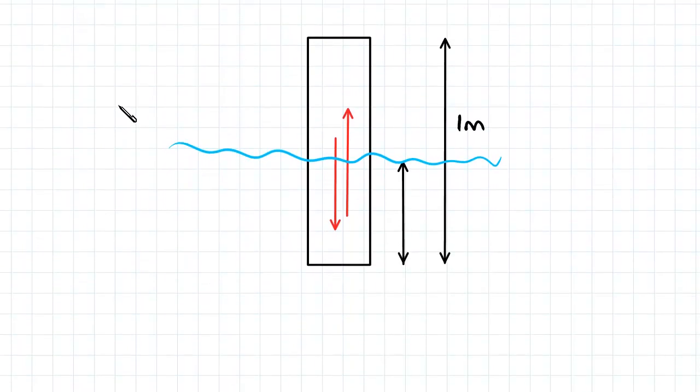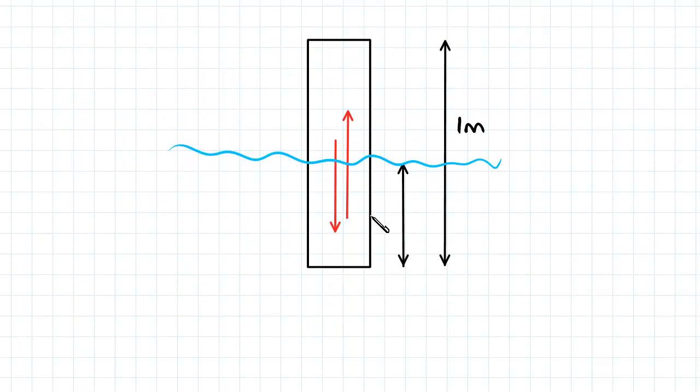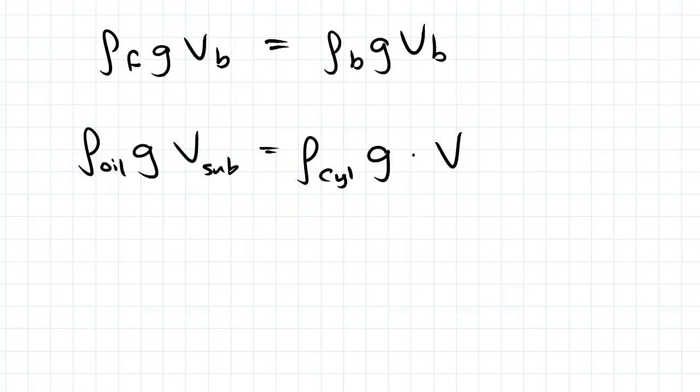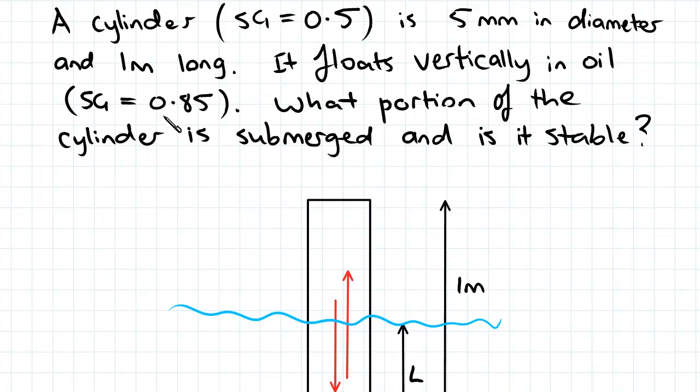So back to our example here, we're going to define the length from the bottom of the cylinder to the top of the fluid as a variable L and we're going to solve for L. We'll do that by subbing in our values here. The specific gravity of oil was given to us as 0.85.